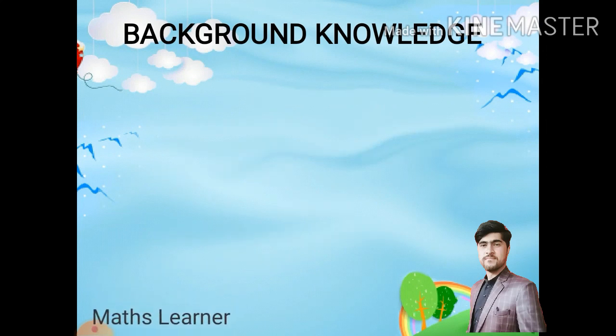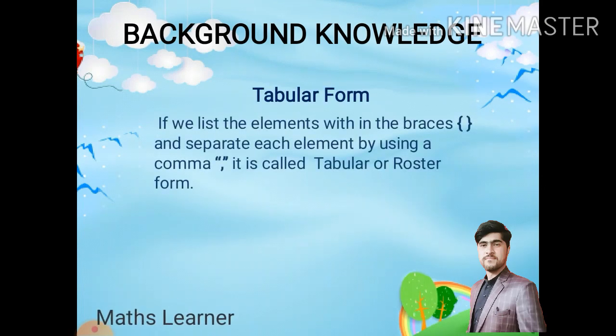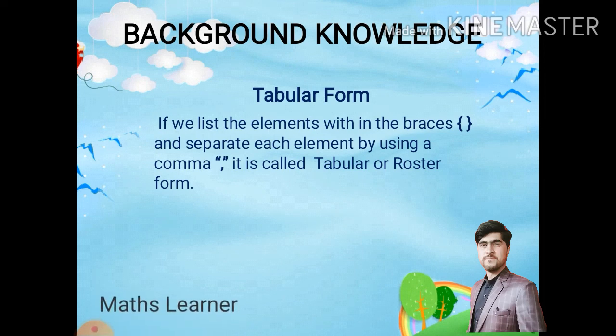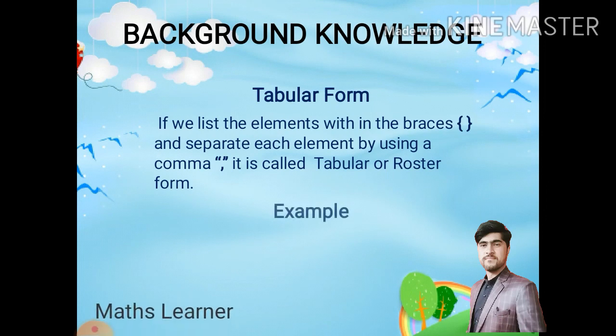The third thing we have is tabular form. If we list the elements within the braces and separate each element by using a comma, it is called tabular or roster form. When we write the set elements in brackets, in list form, and separate them from each other with the help of comma, that form is called tabular form. For example,